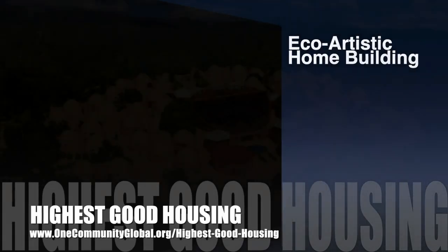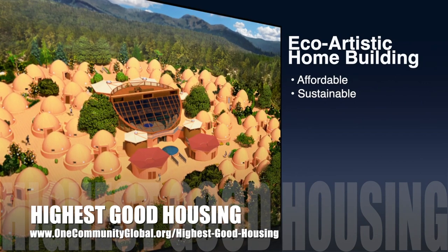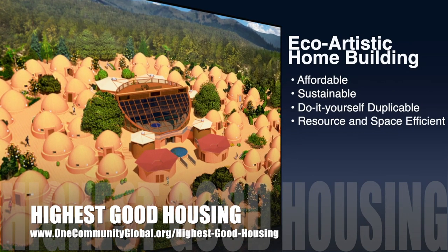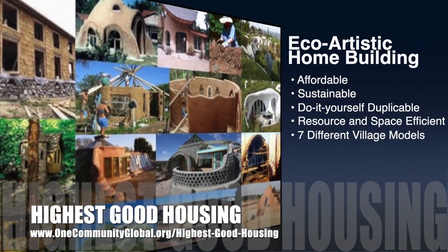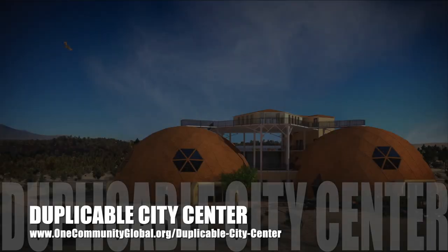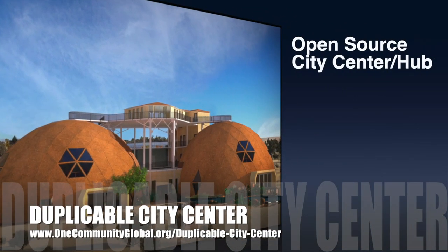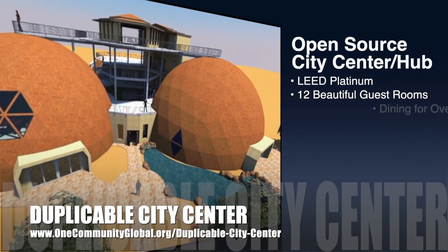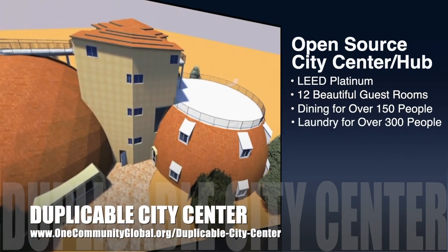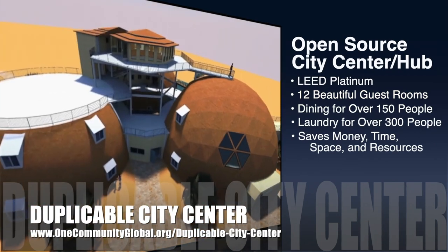The One Community approach to highest-good housing is eco-artistic home building that is affordable, sustainable, do-it-yourself, duplicable, resource- and space-efficient, and consists of seven different sustainably constructed village models. One Community is also creating an open-source duplicable city center designed to be LEED Platinum certified, provide 12 guest rooms, dining for over 150 people, and laundry and recreation space for over 300 people — all while saving money, time, space, and resources.